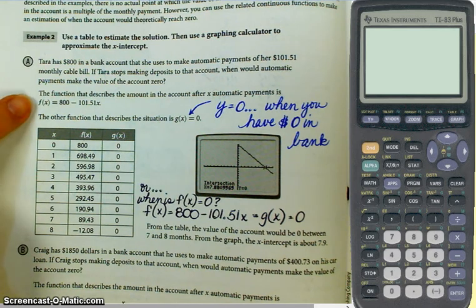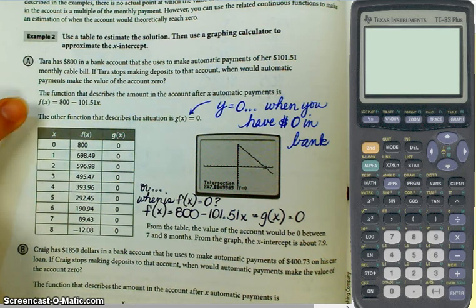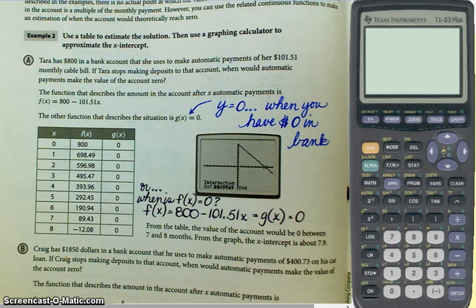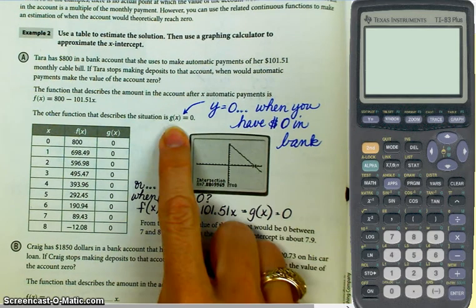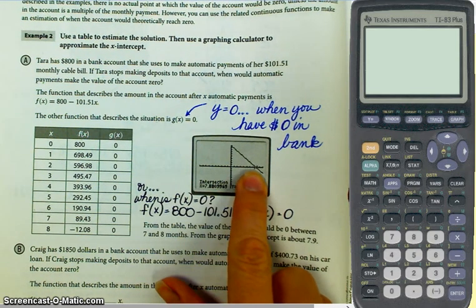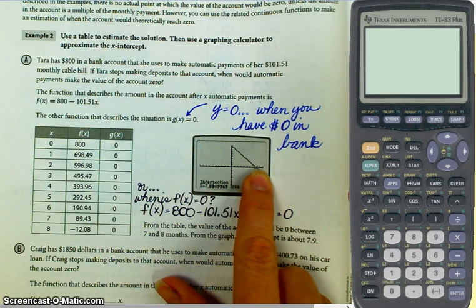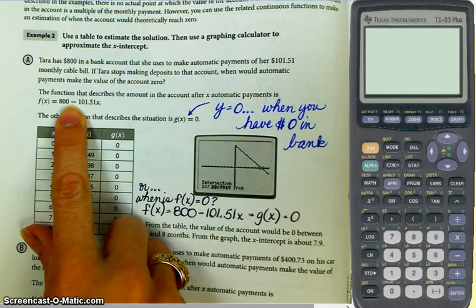This is the function that describes the amount in the account after x, a certain amount of automatic payments. The other function that we're going to use is g of x equals zero. Basically, y equals zero. That's not y'all's bell. That's just one that's in the background. So basically y equals zero. That's an equation for the x-axis.